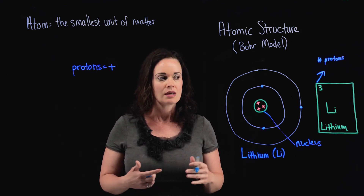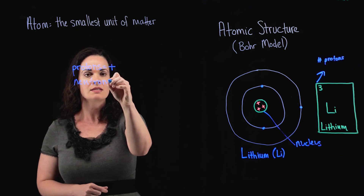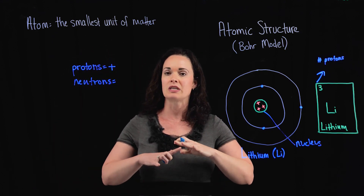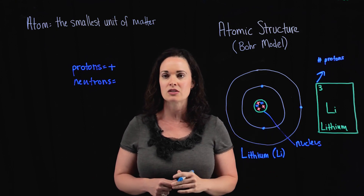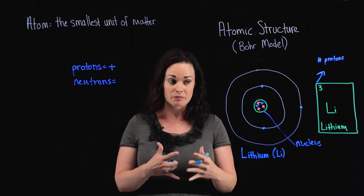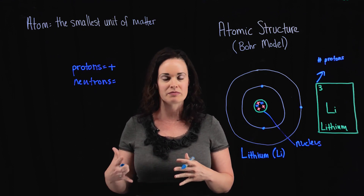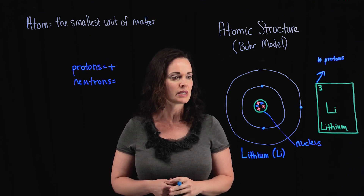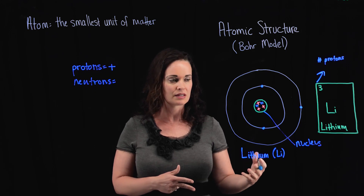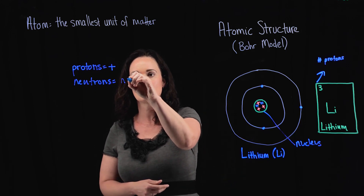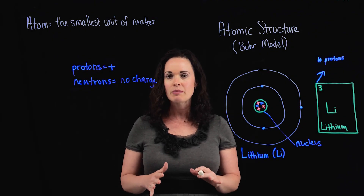Also found in the nucleus of atoms are what are known as neutrons. They're in the nucleus, they don't have a charge — they're neutral. We don't worry about them so much in anatomy and physiology, so I don't typically draw them. If you take chemistry classes you'll be more concerned with them, but for A&P we don't get into neutrons so much. You should know that when they're present they're in the nucleus and they're neutral.